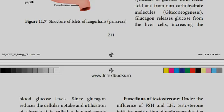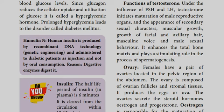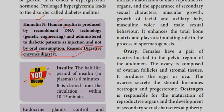If you have diabetes, you need insulin. You can get insulin through injection, such as Humulin. The half-life period of insulin is about six minutes. In circulation, it takes around 10 to 15 minutes to be fully processed.